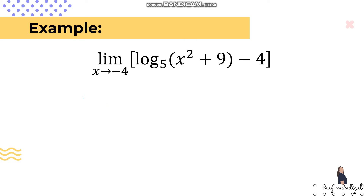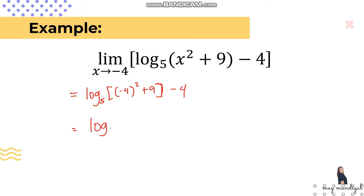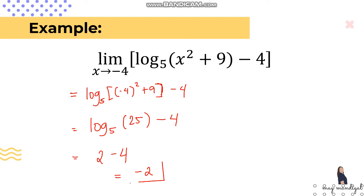Let's try another example. Substituting, we have logarithm base 5 of ((-4)^2 + 9 - 4). Simplifying inside: log base 5 of (16+9) - 4 = log base 5 of 25 - 4. Since log base 5 of 25 equals 2, we get 2 minus 4. Therefore, the limit of this function is -2.